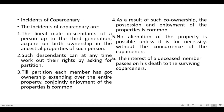Incidents of coparcenary in Mitakshara school: Lineal male descendants up to the third generation acquire by birth ownership in the ancestor's property. Such descendants can at any time work out their rights by asking for partition. Till partition, each member has ownership extending over the entire property conjointly and enjoyment of the properties is common. No alienation of the property is possible without the concurrence of the coparceners unless for necessity, and the interest of a deceased member passes on his death to the surviving coparceners.